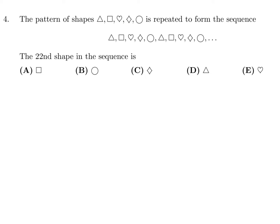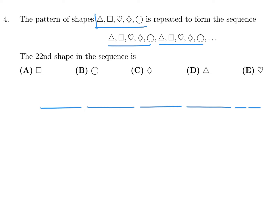Question number 4. The pattern of shapes is repeated to form this sequence. The 22nd shape in the sequence is. The pattern is triangle, square, heart, diamond, and circle — it repeats every 5. So 5, 5, 5, and 5 gives us 20 shapes. Then the pattern starts again with the triangle as the 21st and the square as the 22nd shape. The answer is B.